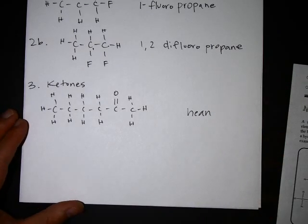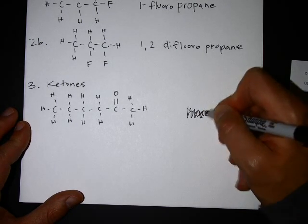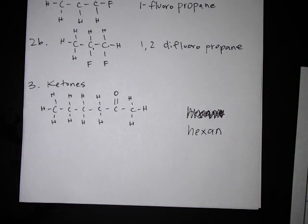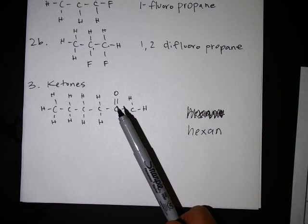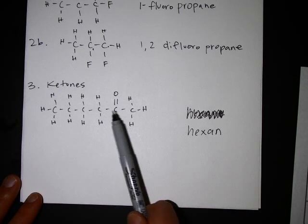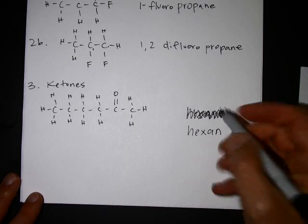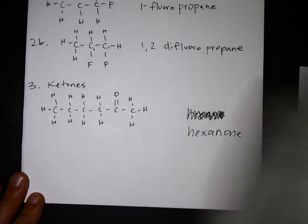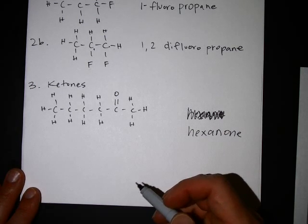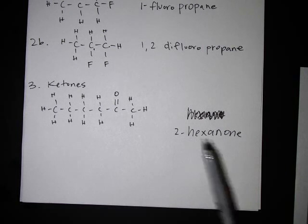You don't use an -ene ending because the double bond is only between carbons, not between carbon and oxygen. So we call it hexane because all the carbons are single-bonded. Then this part — the carbon double-bonded to oxygen — indicates it's a ketone. You add the suffix -one and indicate where it is. That carbon is on the second carbon, so the name is 2-hexanone. Two is the position, hex is the number of carbons, -one is the ketone suffix.